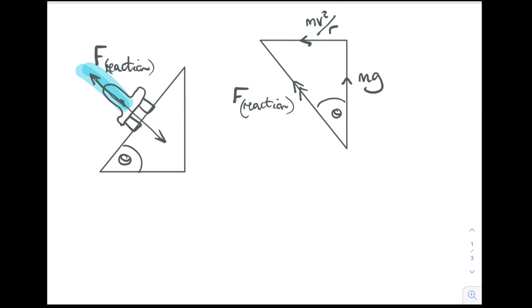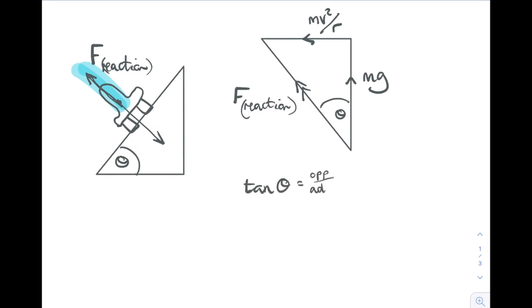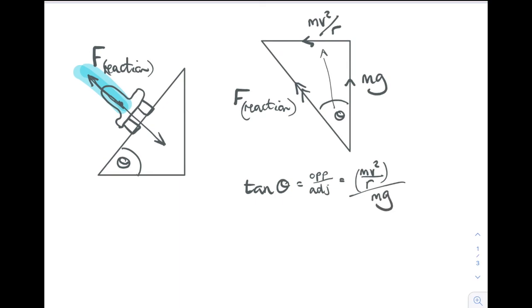Now we can do a little trigonometry, because tan theta is the opposite over the adjacent. That's mv² over r divided by mg. Let's simplify that.